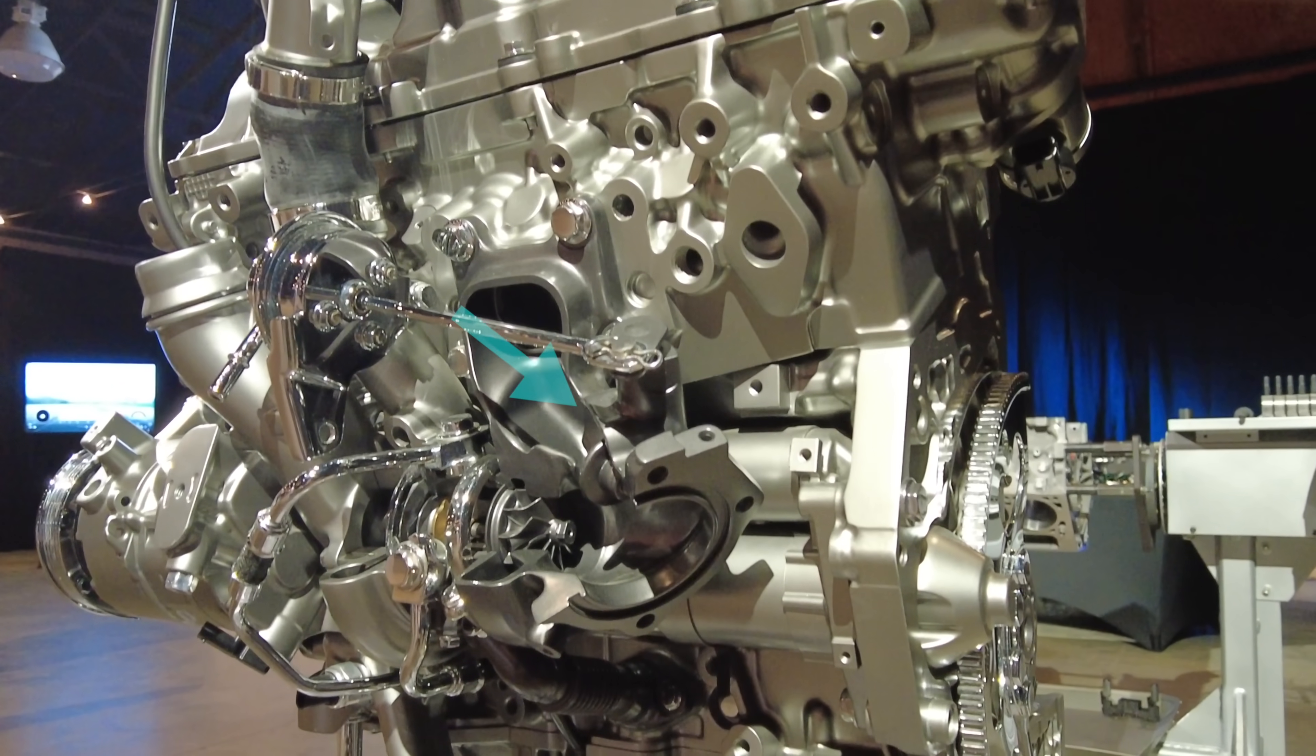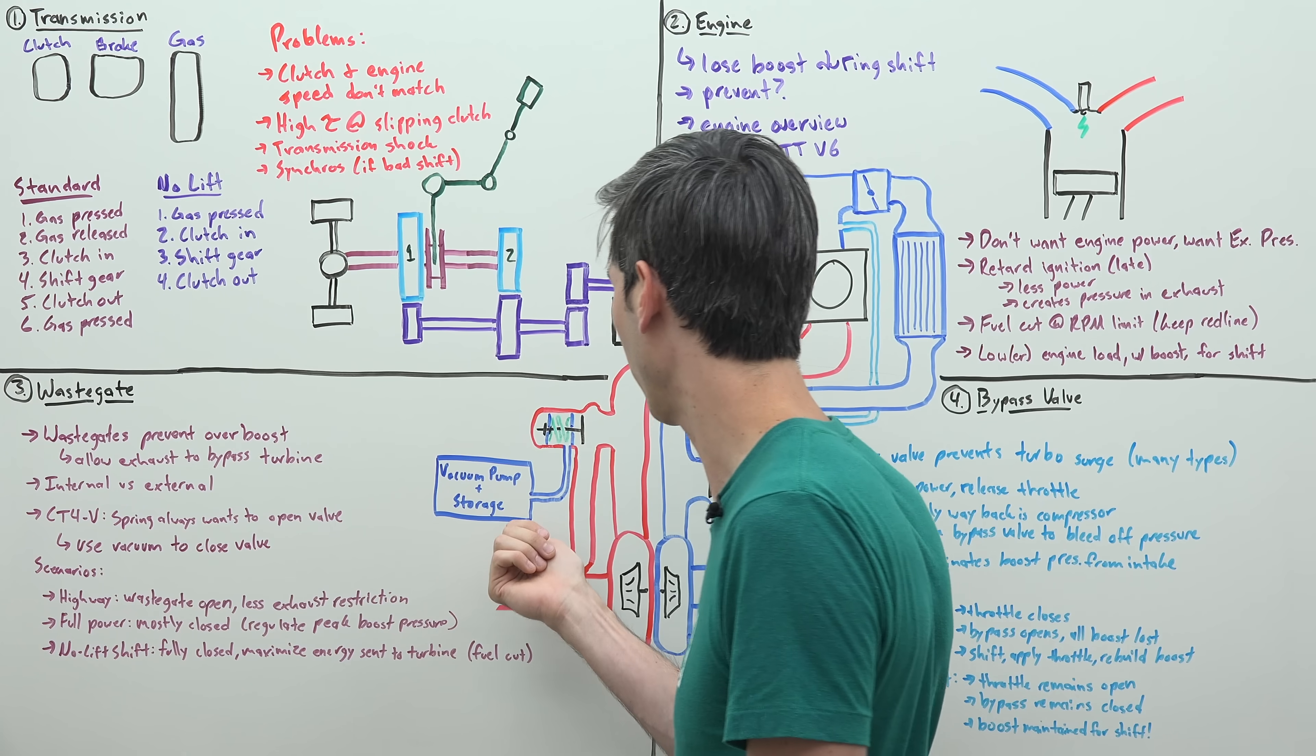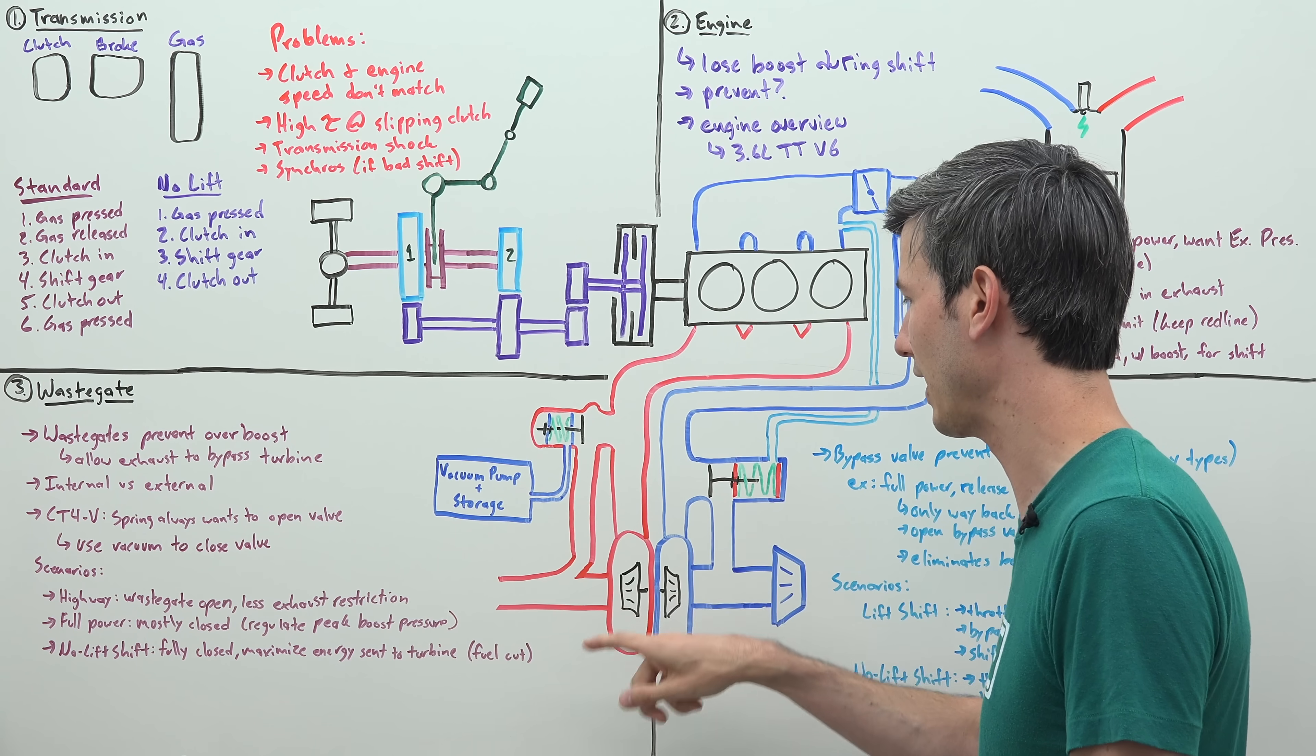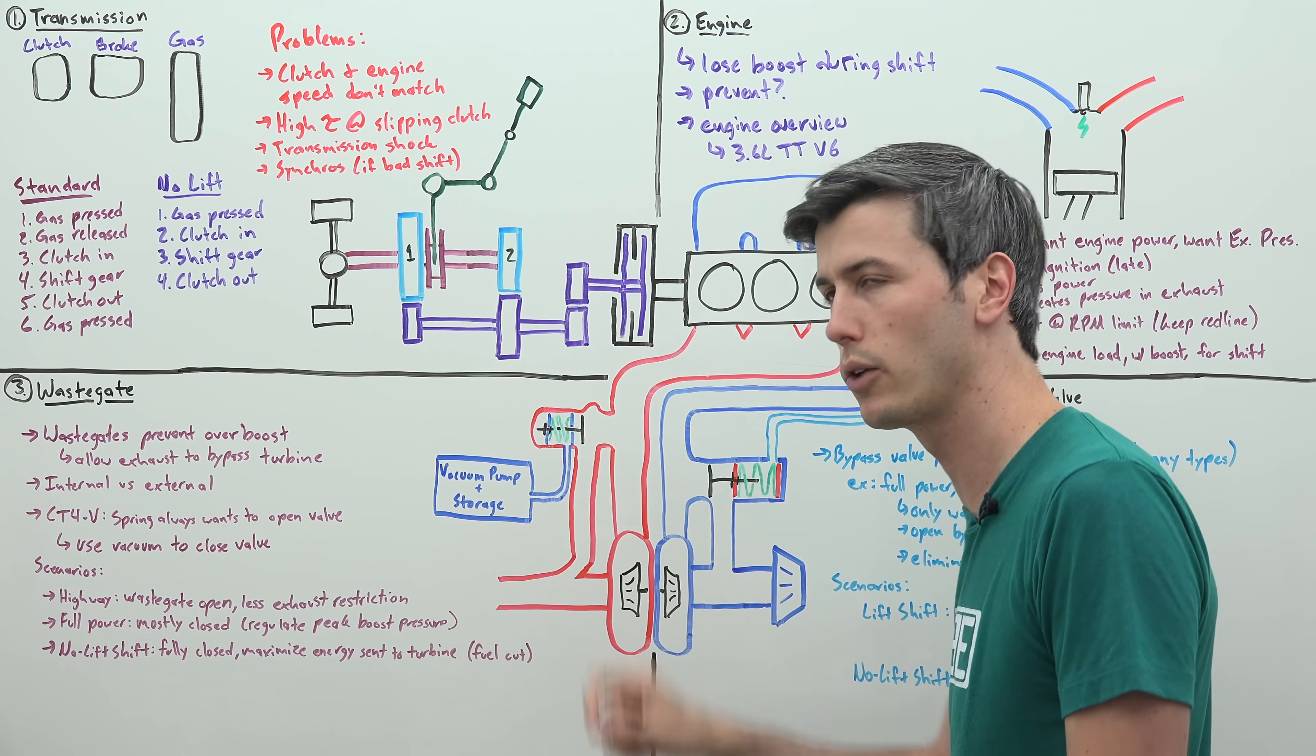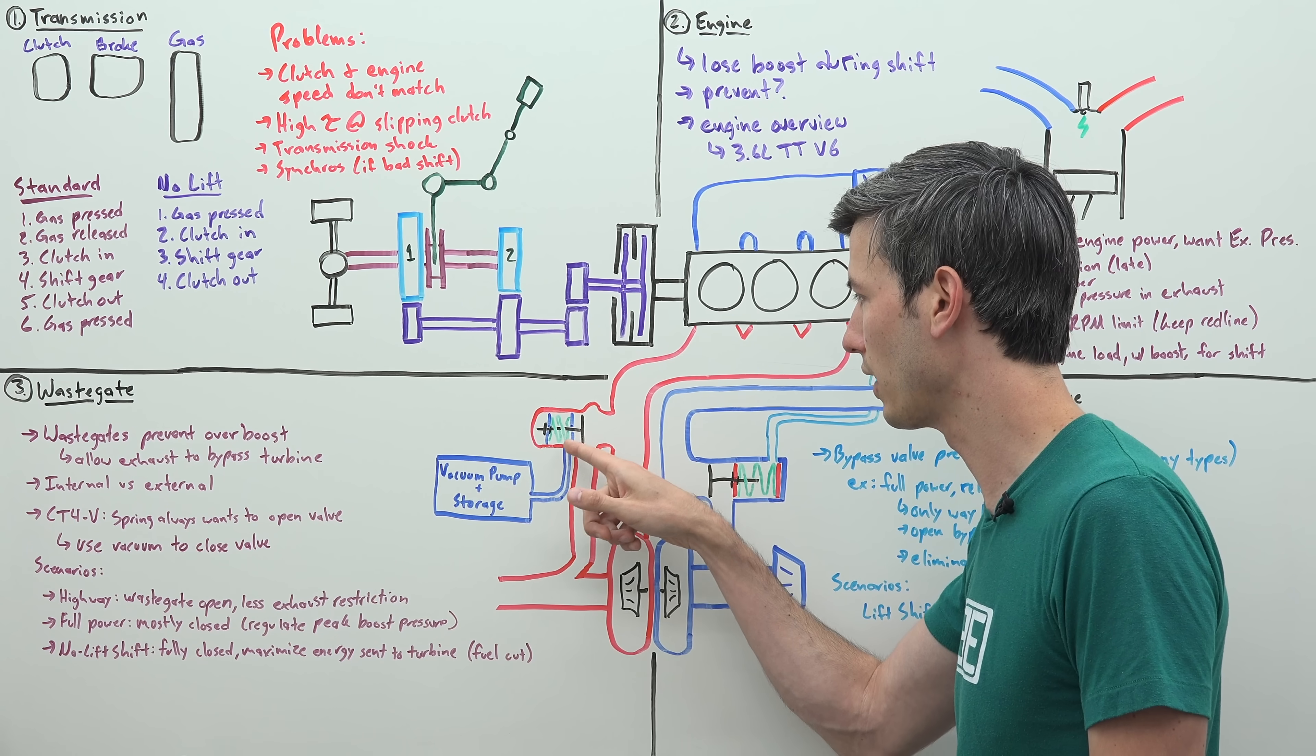Now on the Cadillac CT4V, this is actually an internal wastegate, not an external like I have shown here. But regardless, that's just a very simple difference in how you have that exhaust gases diverted. They're using a vacuum pump and vacuum storage in order to draw a vacuum within the wastegate itself.